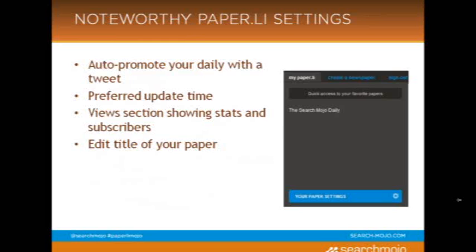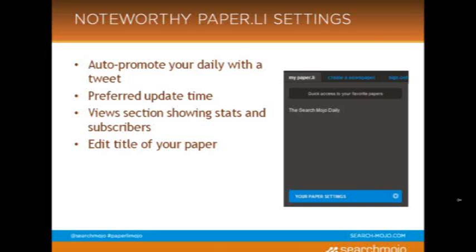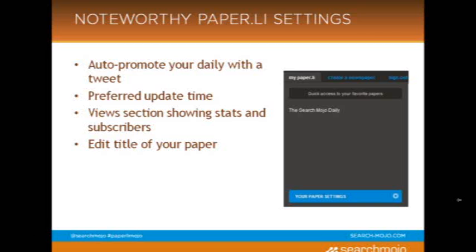Here are some noteworthy Paper.li settings. Once you've decided if you're going to do a list, a hashtag, or a user, you can decide if you want to auto-promote your Paper.li with a tweet. You can edit your preferred update time, which is a relatively new feature within the service. You can also decide what frequency you'd like to send out the Paper.li — whether it's daily at a certain time, either morning or evening, or weekly. A new update as of November 18th is a view section, so you can keep an eye on how many people are checking out your paper and how many are subscribing. You can also now edit the title of your paper, which is nice if your list name is a little lengthy — you can shorten it up and save some room in that tweet.